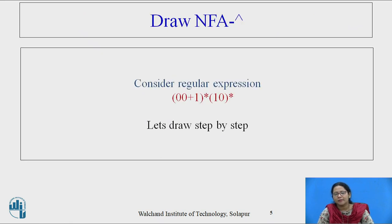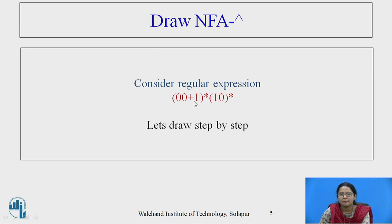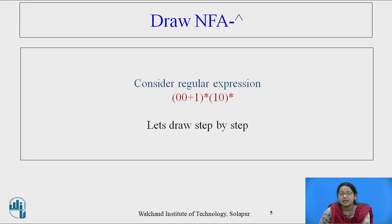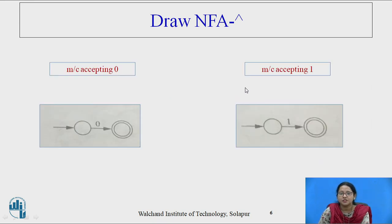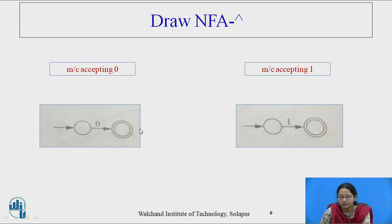We will see one example. Consider the regular expression (00+1)*10*. Let us draw the diagram step by step. We will consider the regular expression part by part, starting from the basic machines. This is a machine accepting 0 — initial state and final state. This is a machine accepting 1.